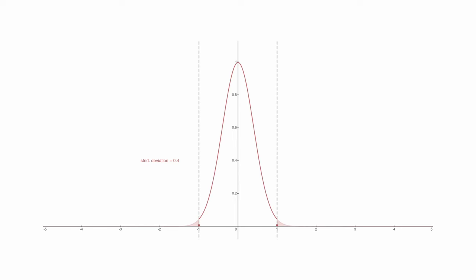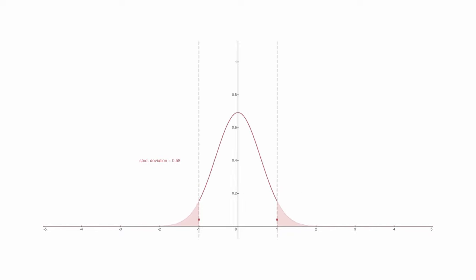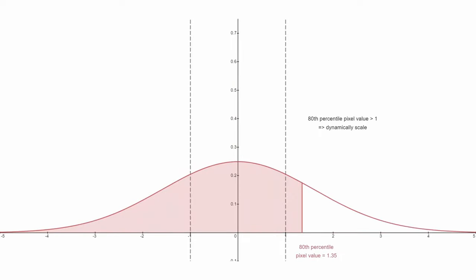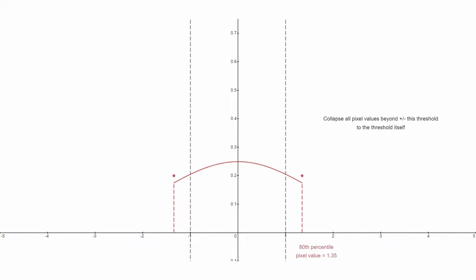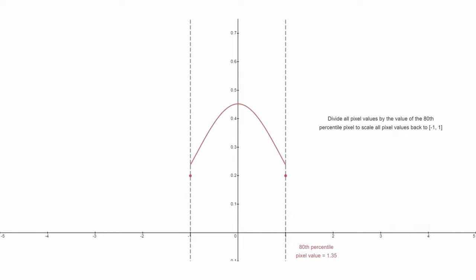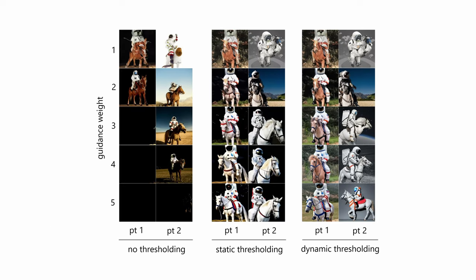But there is a problem: large guidance weights generate good quality images, but they sometimes cause images to look saturated or unnatural. To avoid this, the authors introduced two techniques to keep pixel values in the allowed range: static thresholding and dynamic thresholding. Static thresholding pushes any value outside the minus one to one range to minus one for negative values and one for positive values. With dynamic thresholding, a percentile is chosen and at each time step, if the percentile exceeds one, the pixel values are thresholded to that percentile's value and then divided by it, effectively being scaled between minus one and one. Dynamic thresholding was found to lead to much better photorealism and alignment, especially for large guidance weights.